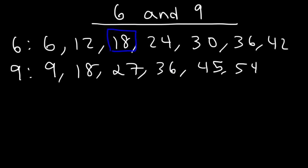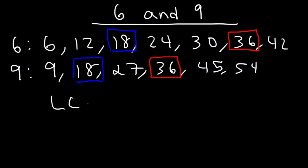So 18 is a common multiple between 6 and 9, and also 36. But the least common multiple is 18 — it's the lowest of the two numbers, so that's the LCM. It's 18.